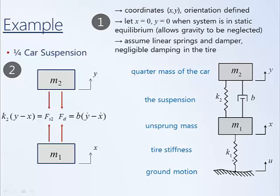For mass M1, we also have the force generated by spring K1. Using the same approach, I imagine the ground is fixed, move M1 in the direction of positive X, which stretches the spring and applies a downward force on the mass. The force generated is proportional to the deformation of the spring, where the top moves with displacement X and the bottom moves with displacement U.